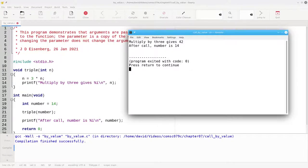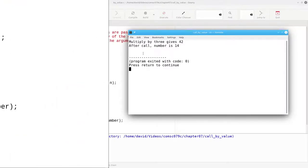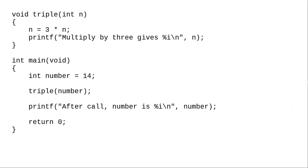That's because functions use something named call by value. Here's what's happening behind the scenes.